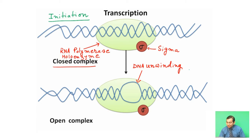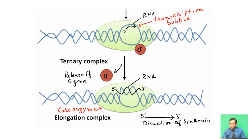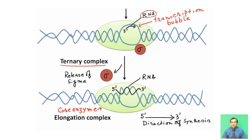The next step is the formation of an open complex, where DNA unwinding starts. After that, a ternary complex forms, in which a transcription bubble forms and RNA transcription initiates in the 5 prime to 3 prime direction. Following initiation, sigma is released, and the elongation process is carried out by the core enzyme — alpha 2, beta, and beta prime.